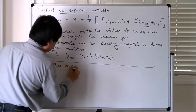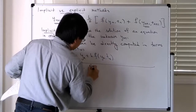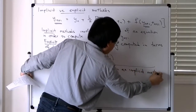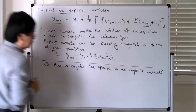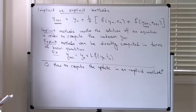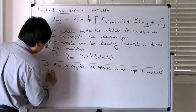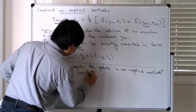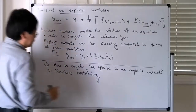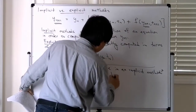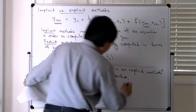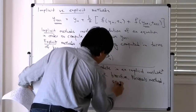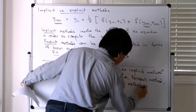The question is how to compute the update in an implicit method. Of course, there are various nonlinear root solvers you can use — some general class of nonlinear root finding. Examples of these might be bisection, Newton's method, and the secant method. These are things which you might have seen before.